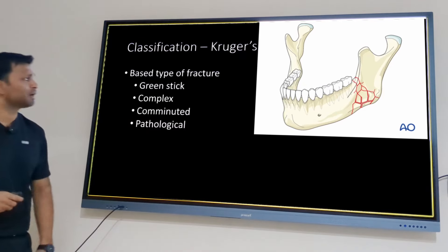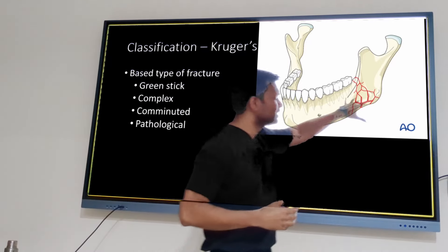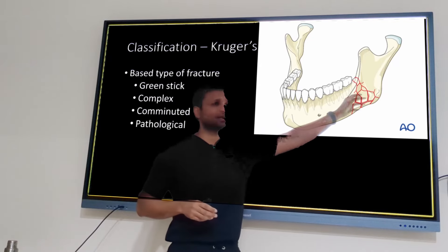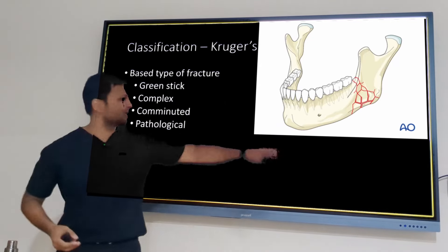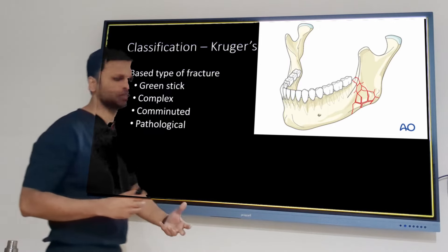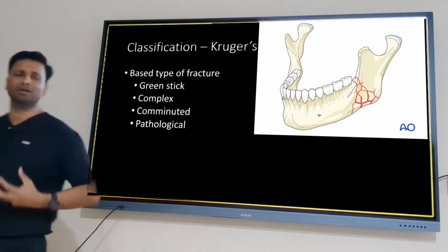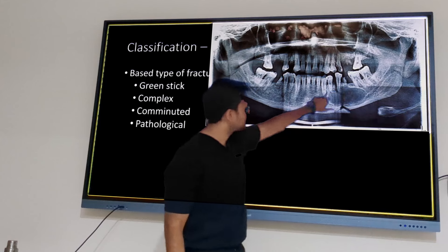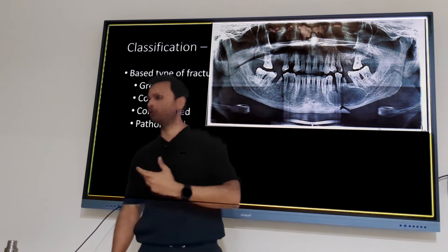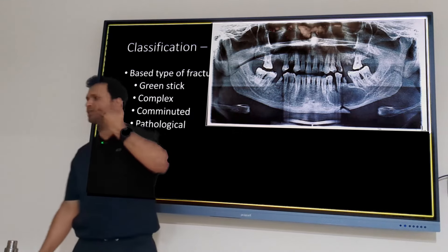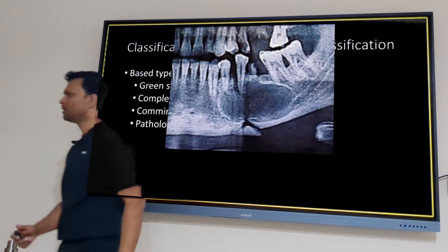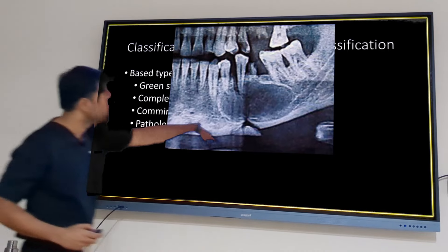A comminuted fracture means the force was so great that the bone is broken into many smaller pieces — if opened surgically, all the pieces would fall out. This is actually an ideal case for closed reduction; it should not be opened. A pathological fracture occurs when a large tumor or cyst leaves very thin cortical bone, which then fractures even with minimal pressure or normal occlusal force.